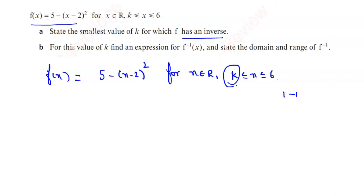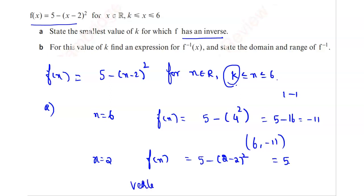So now consider, to first find the value of k, take x = 6. Then f(x) will be 5 - 4², which is 5 - 16 = -11. So one set of points is (6, -11). Now we need to find the vertex. For that take x = 2, so f(x) = 5 - (2 - 2)² = 5. Hence the vertex is (2, 5).